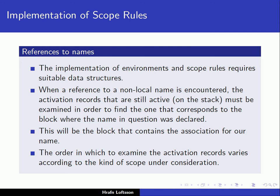If we are referring to a local variable, the memory space for that variable is inside the current activation record. But if we are referring to a non-local variable, it can be in some activation record that is still active. The problem is: in which one? We have to have a way to find it at runtime. It will be in the block that contains the association for our name — the block associated with the declaration of the name. The order in which we examine activation records varies according to whether we are in a statically scoped language or a dynamically scoped language.